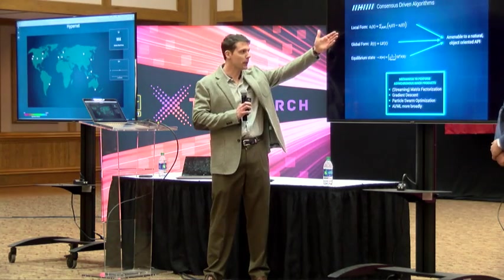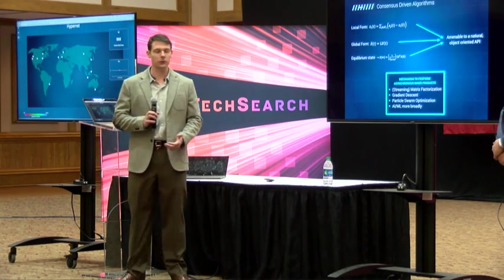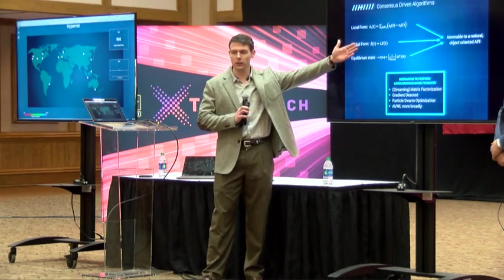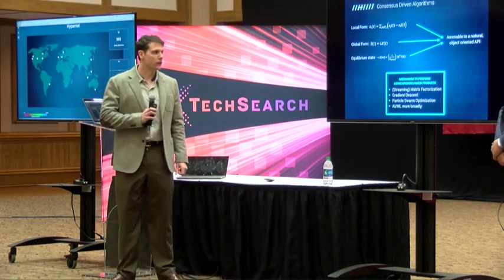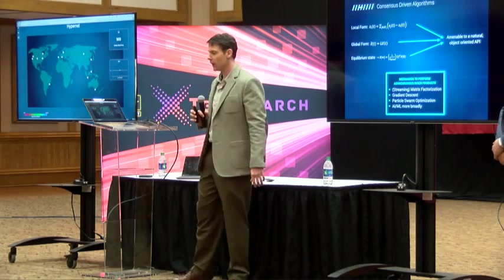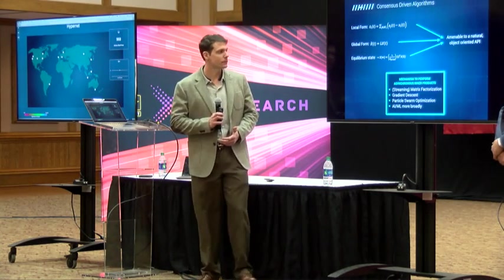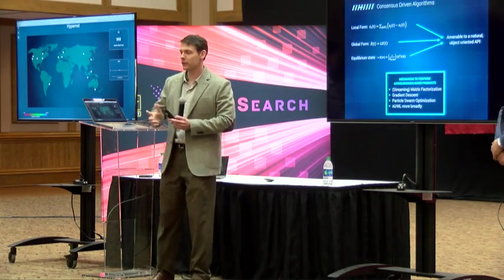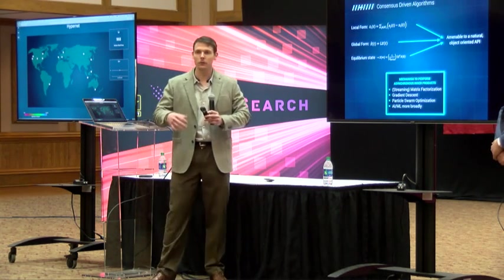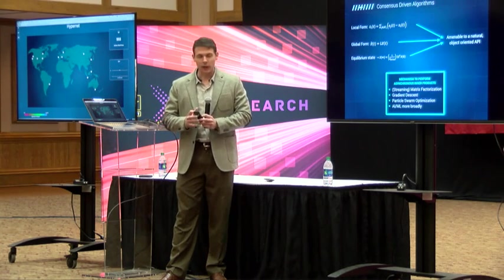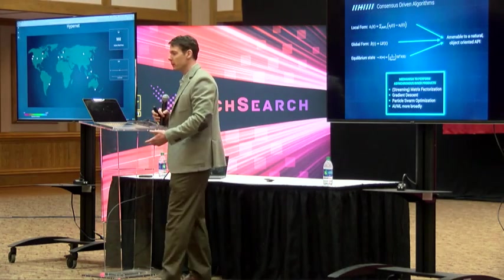Starting with the local form, we can rewrite it in the global form as a system of ordinary differential equations. This linear ODE has a simple solution: the equilibrium state is essentially the average of the initial conditions of all processors. Because this system is linear, when we implement it in code and provide it as an object-oriented API, a developer can write a one-line call in Python without worrying about socket calls or system-level communication. The equilibrium state plus the linearity of the system gives us asynchronicity.